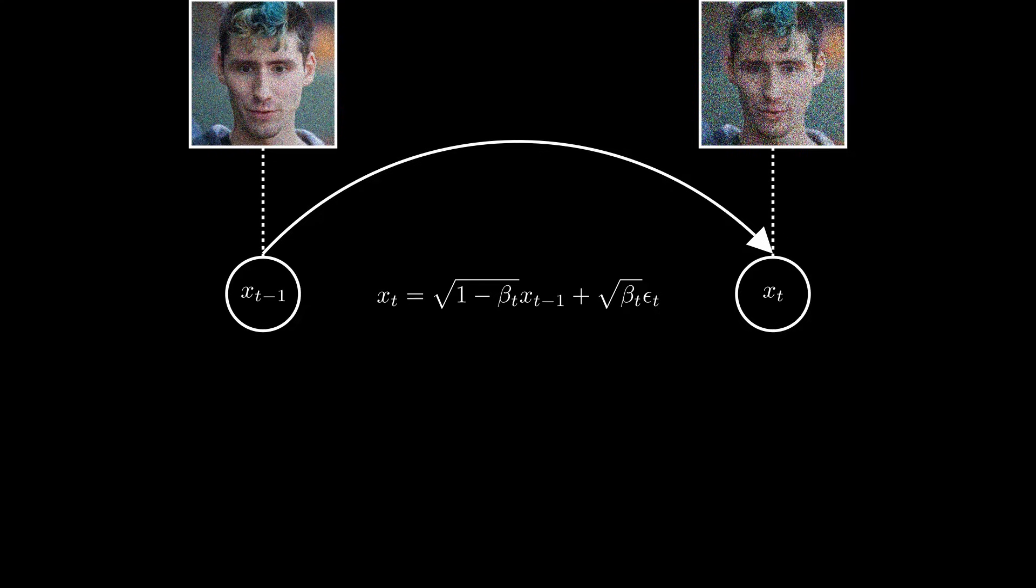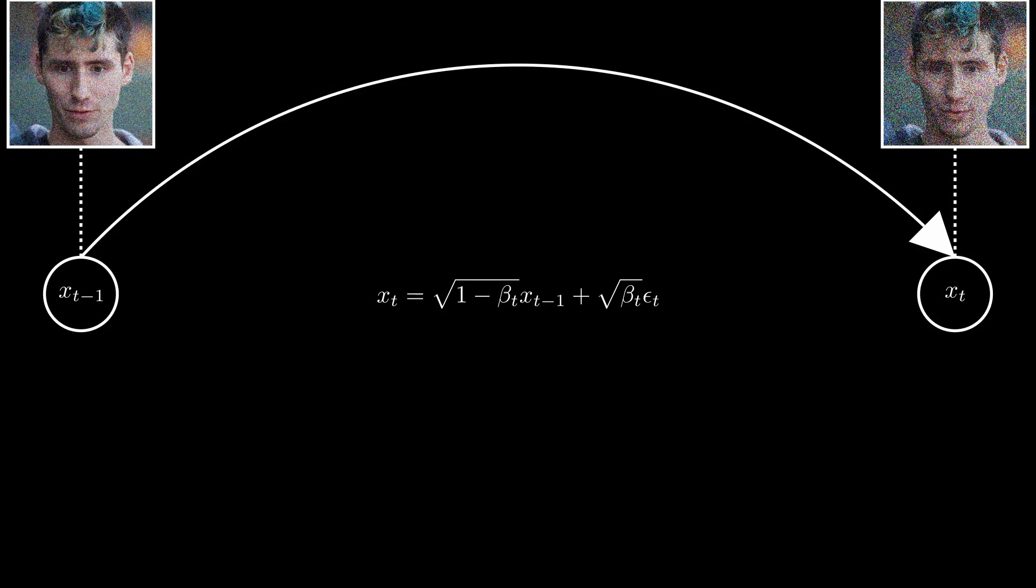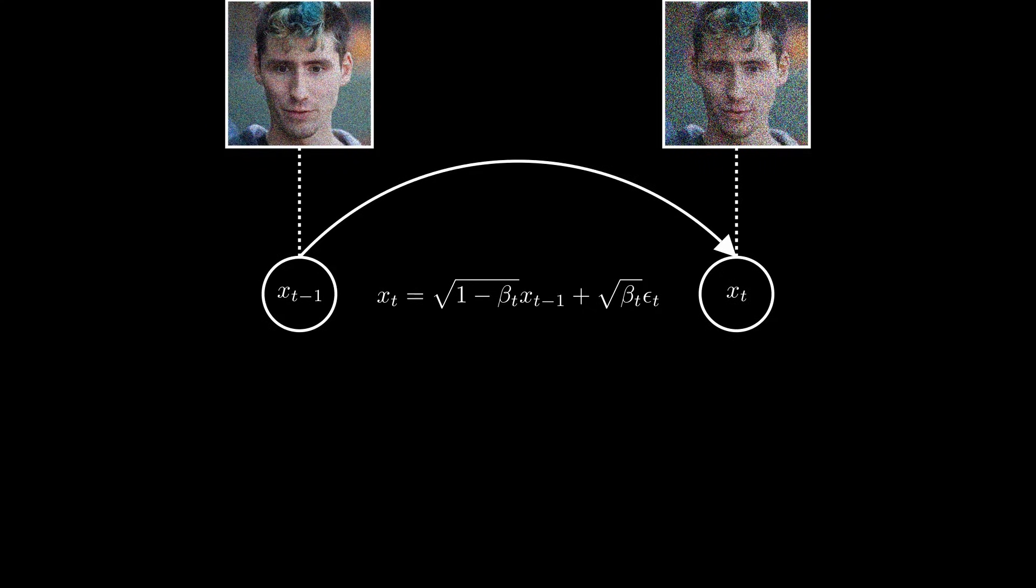The time-dependent beta parameter controls how big each step is, meaning how much noise we add to the image. If we take big steps between each image, the neural network struggles to reverse this noising process. And if we take very small steps, we have to do a lot more iterations to reach pure Gaussian noise.